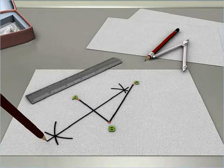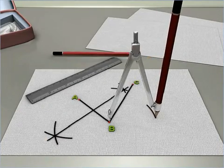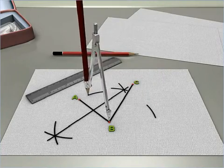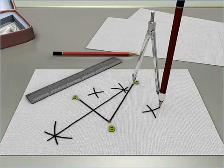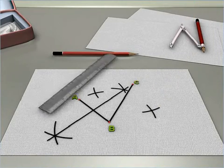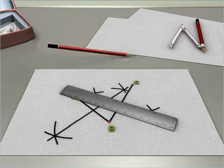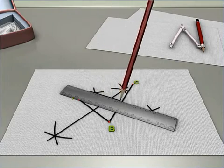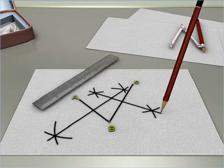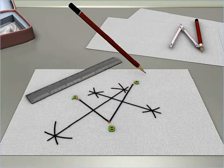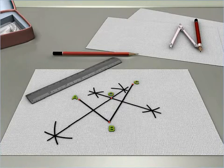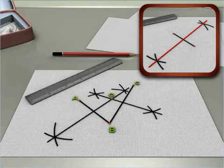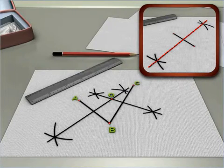Now construct a perpendicular bisector of B-C, intersecting the perpendicular bisector of A-B at O.